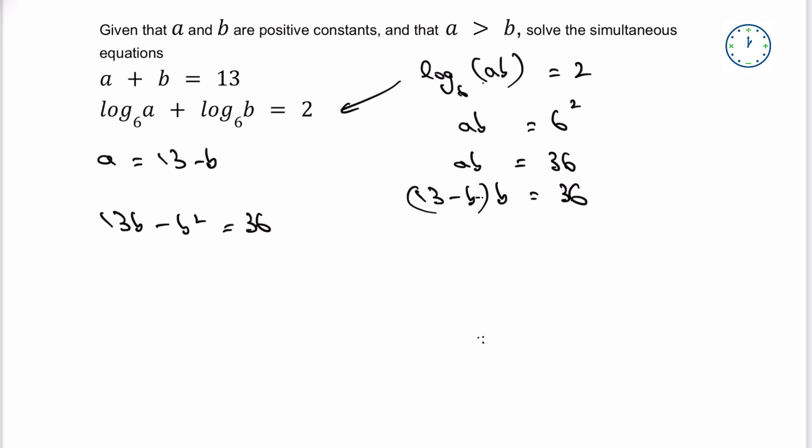OK, that's not particularly helpful, particularly with a negative value of b squared. So I'm going to take that over to the right-hand side. I'm going to make everything equal to 0 and I'm going to get b squared minus 13b plus 36